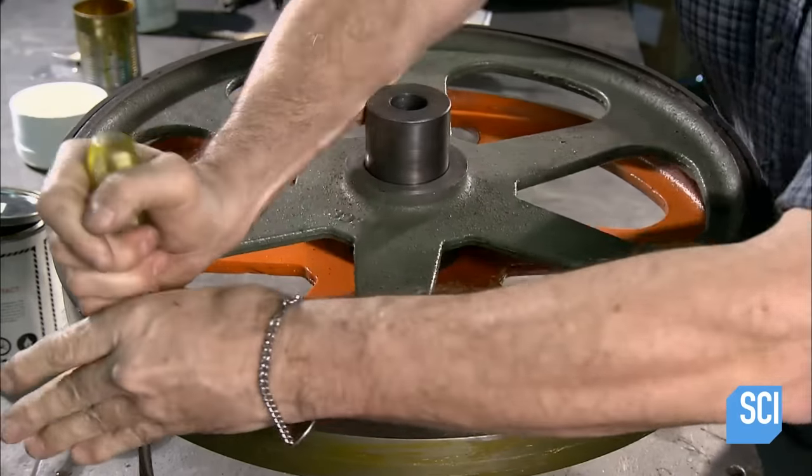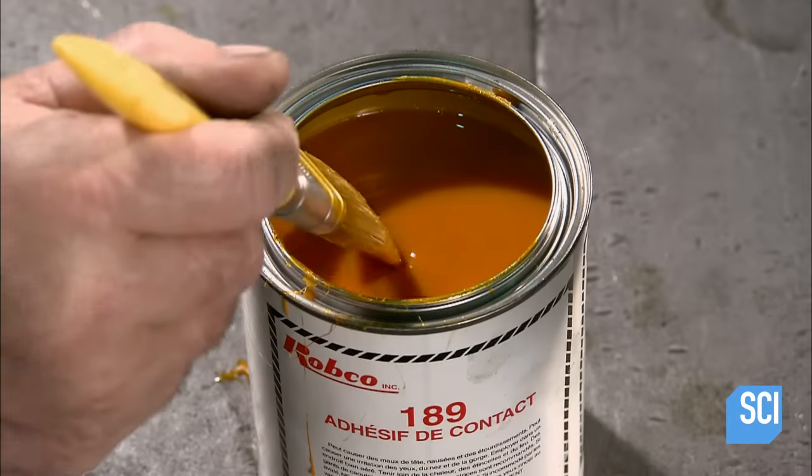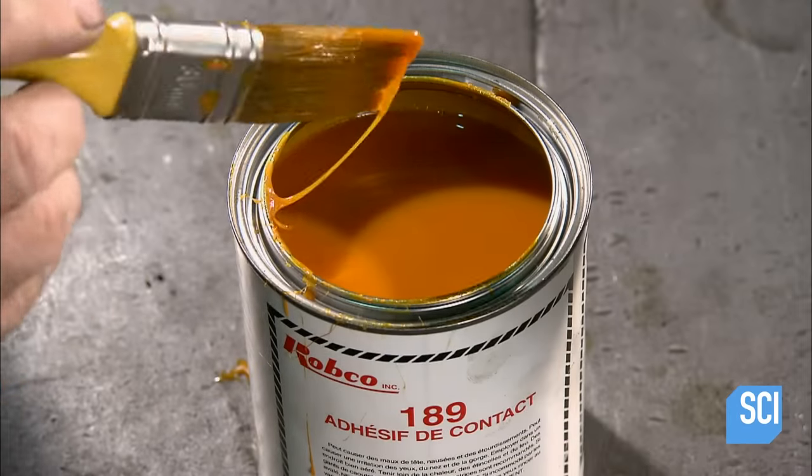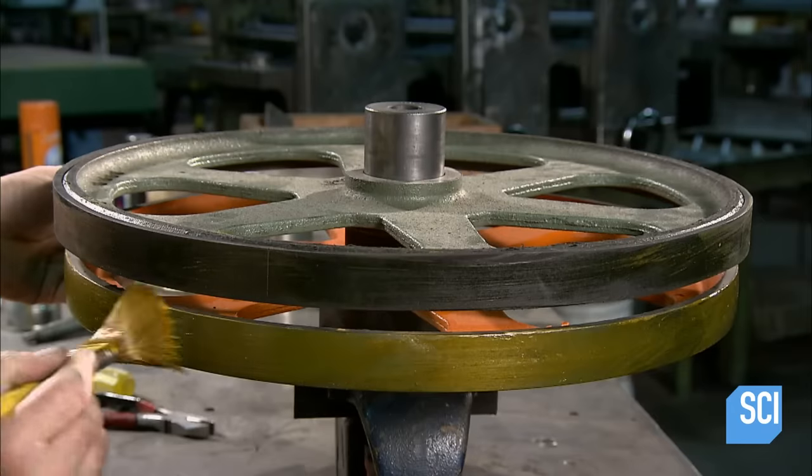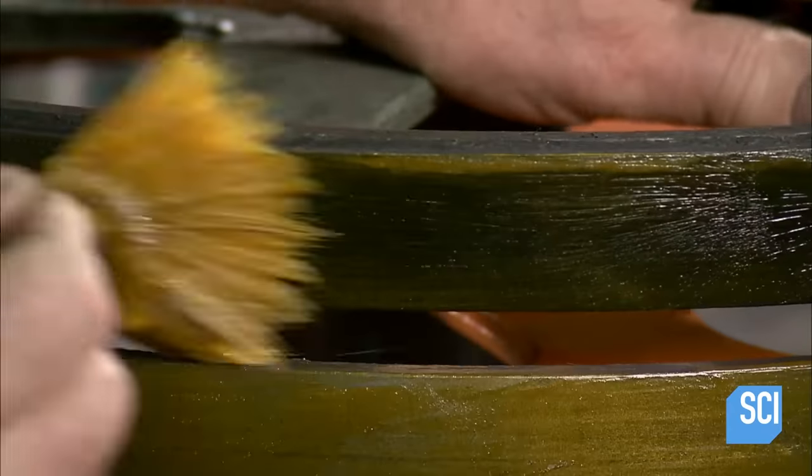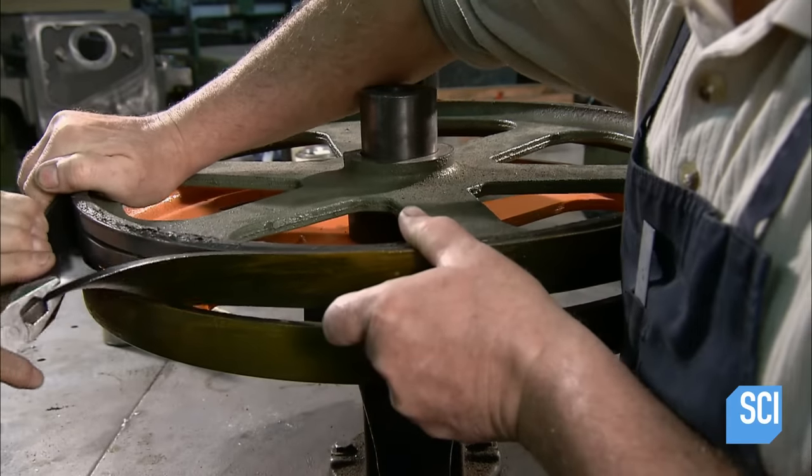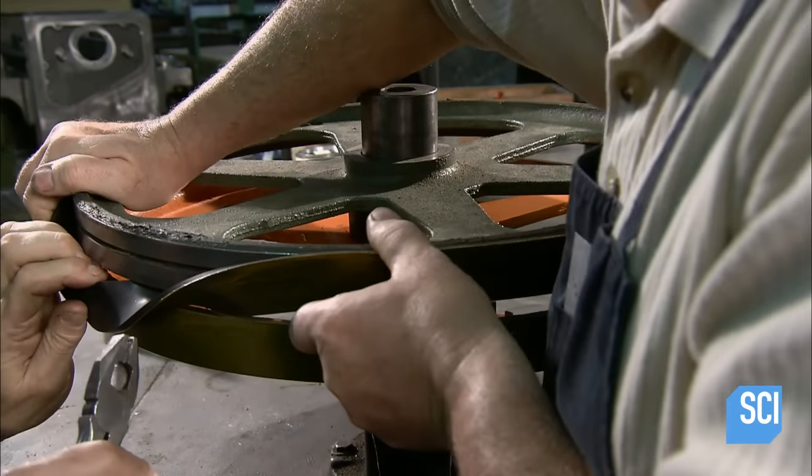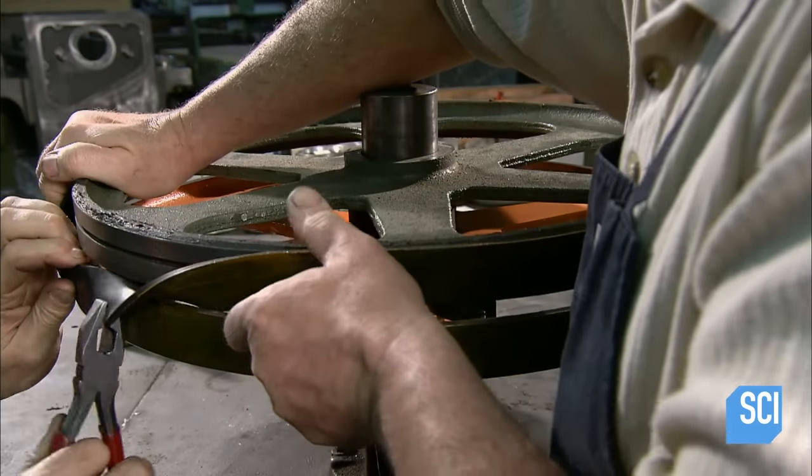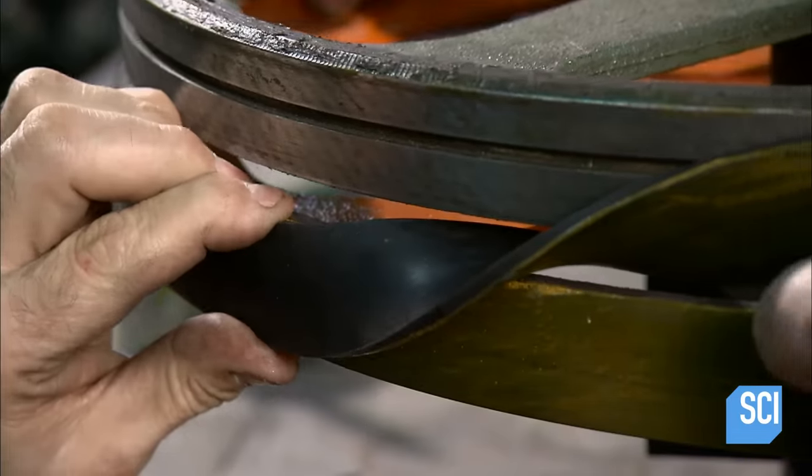Next, they coat both the edge of the wheel and the rubber band on the guide with contact cement adhesive. Then they carefully pull the rubber band off the guide, flip it over, and press the glued side against the glued surface of the wheel.